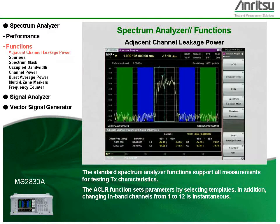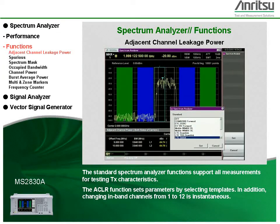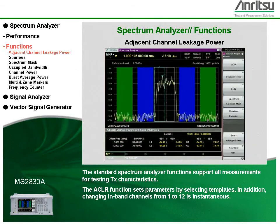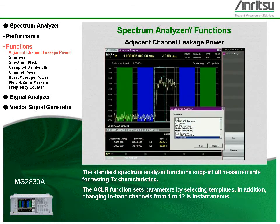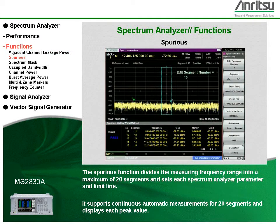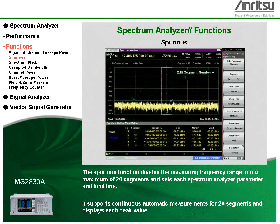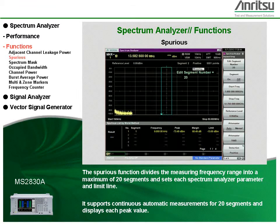The standard spectrum analyzer functions support all measurements for testing transmitter characteristics. The ACLR function sets parameters by selecting templates, and changing in-band channels from 1 to 12 is instantaneous. The spurious function divides the measuring frequency range into a maximum of 20 segments and sets each spectrum analyzer parameter and limit line. It supports continuous automatic measurements for 20 segments and displays each peak value.